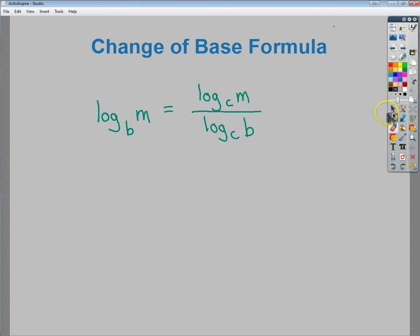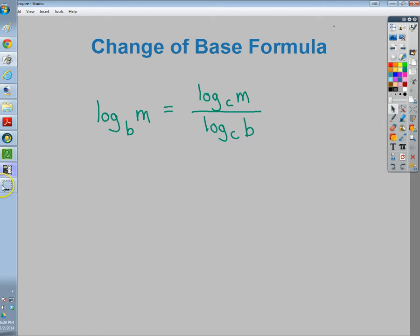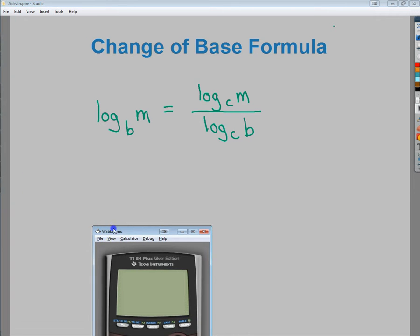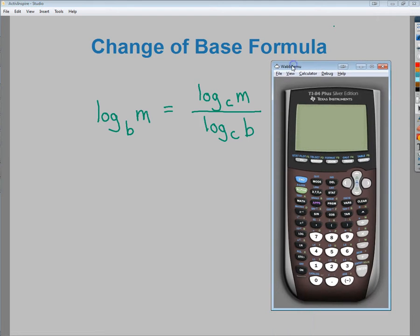What the change of base formula, or why it exists in the first place, is because calculators have a button that says log on it, right here. The problem is that button has a base 10 always. It's just assumed. It's the most common base. We live in a base 10 world. The change of base formula allows me to use that button anyway to still get the correct answer.